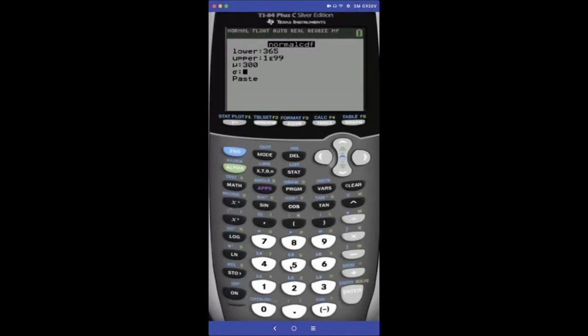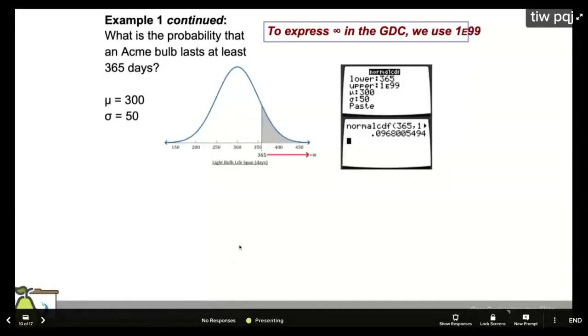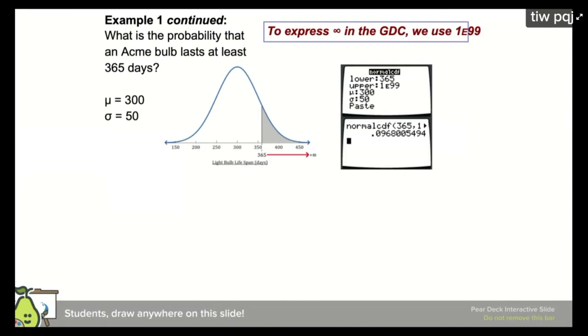Our mean was 300. Standard deviation was 50. Enter. And so that's the probability right there. Remember, for the percentage form, you would just multiply that by 100. And what it's saying is that about 9.68% of the light bulbs will last longer than 365 days. That's exactly what we did. We drew that same bell curve, colored in that part, put in a lower, upper, mean, and standard deviation.